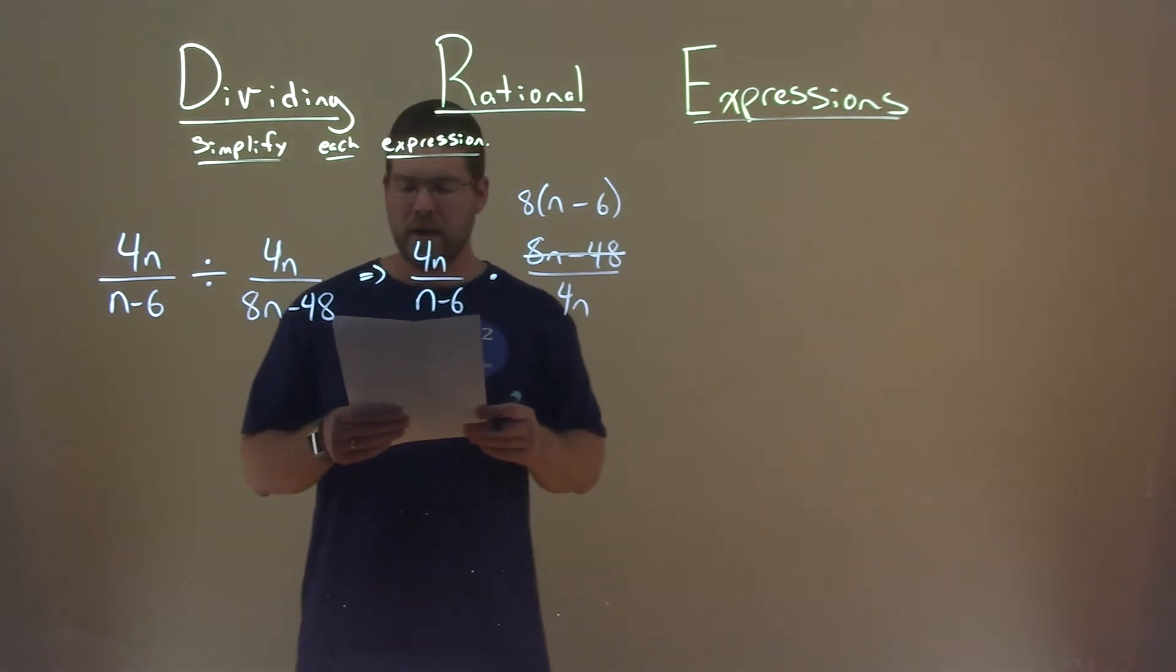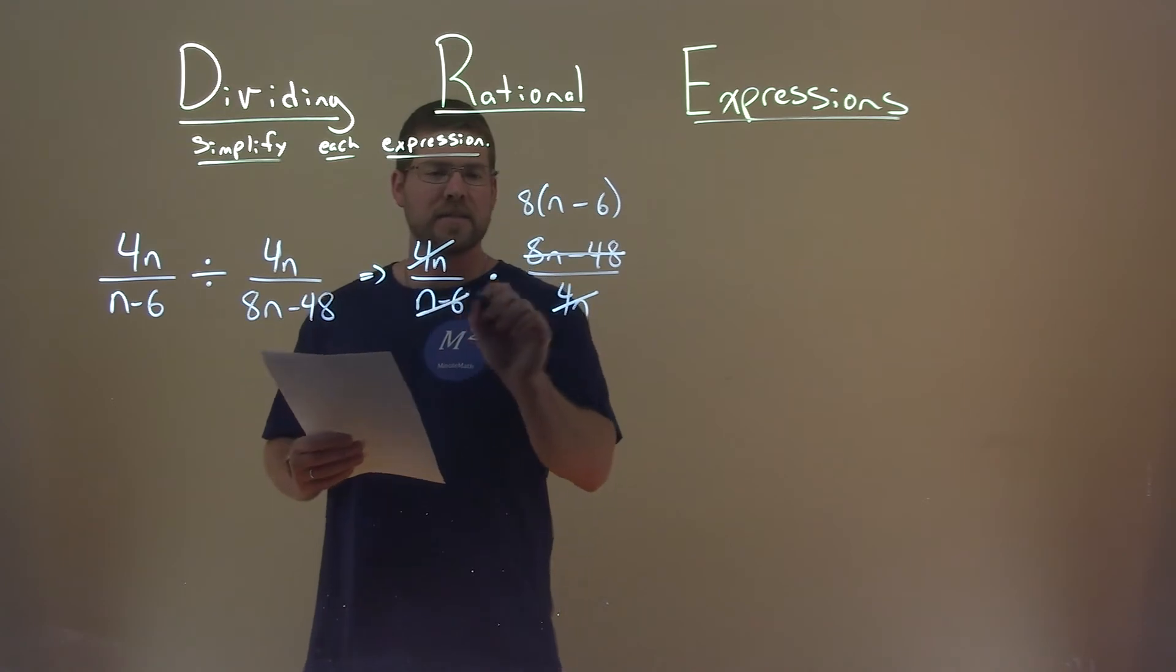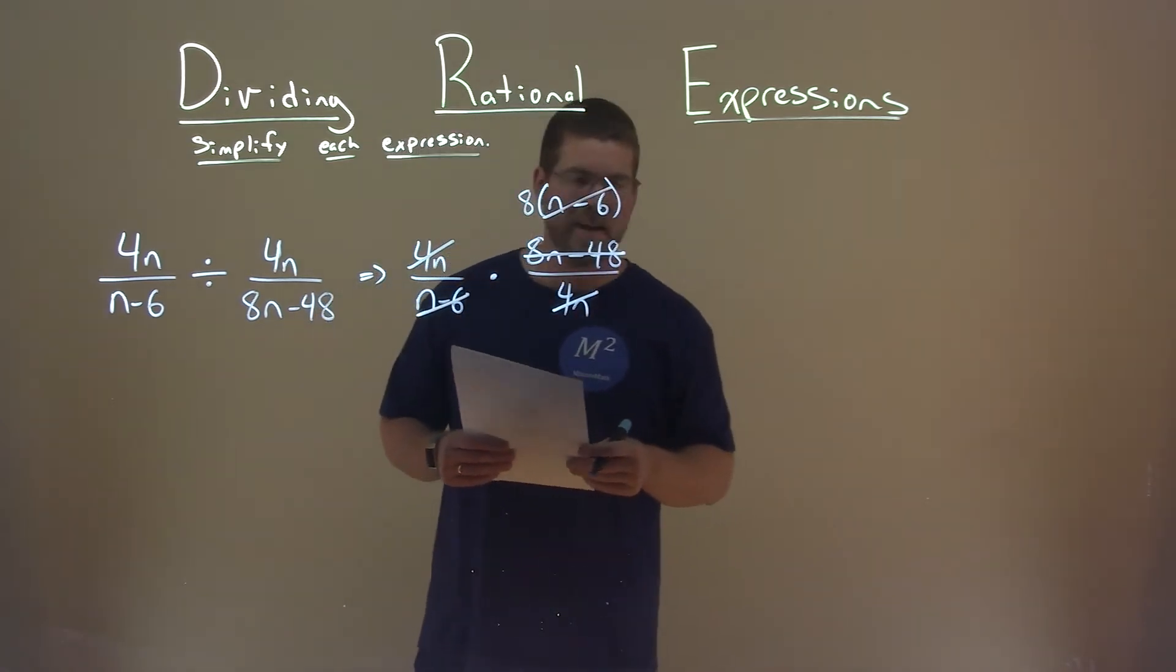Now, let's cancel out what we can. Okay, 4n and 4n here cancel pretty easily, and we can see the n minus 6 here, and this n minus 6 cancels as well.